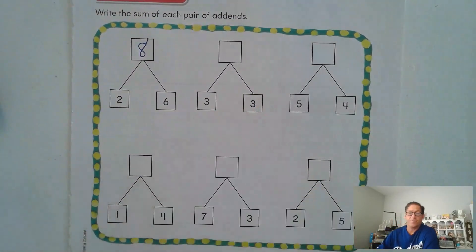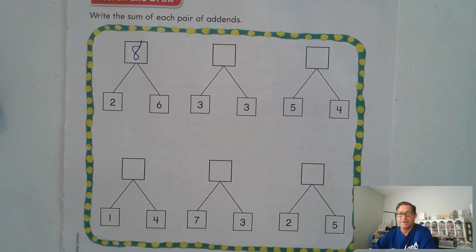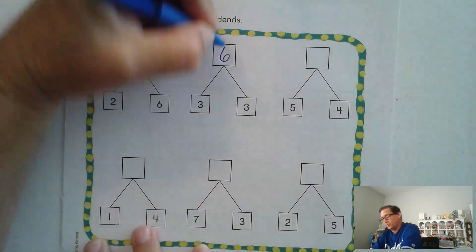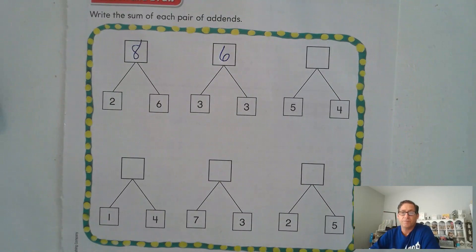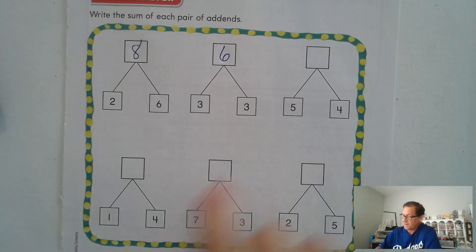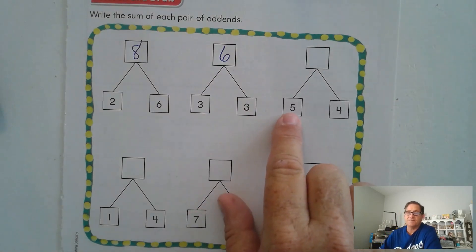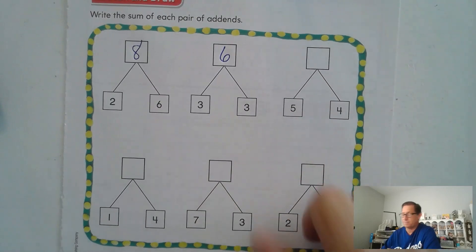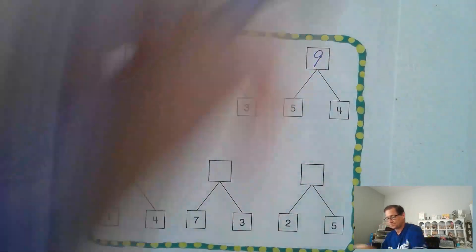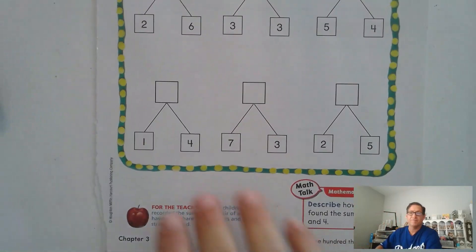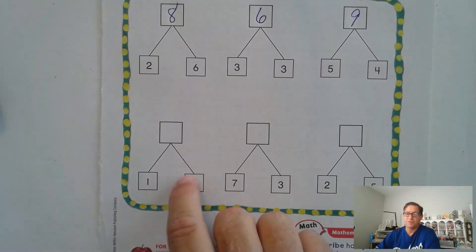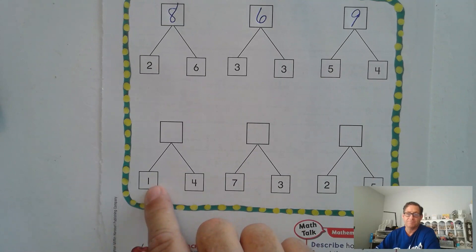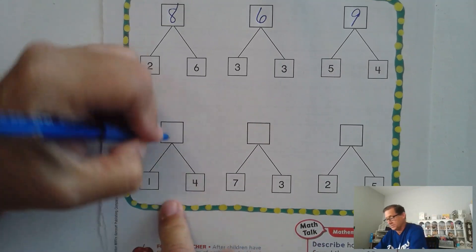How about three and three? Well, that's a doubles fact, right? So we should know three plus three is six. Five plus four — did anybody use the doubles fact for that one? Change the five to a four: four plus four is eight and add one more — nine. Four and one — that one was pretty easy, right? Four and one is just one more than four, which is five.